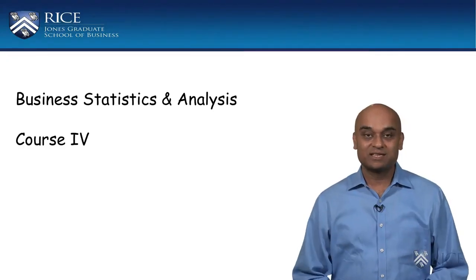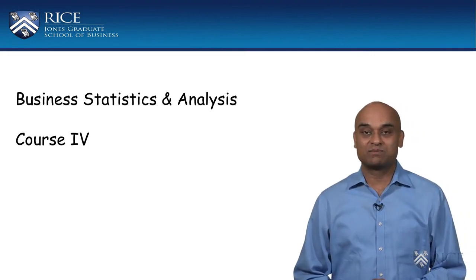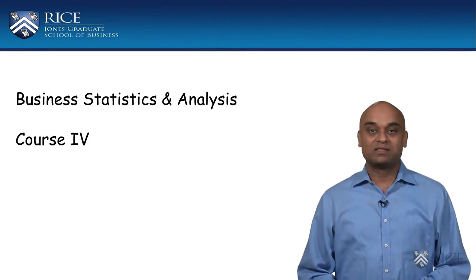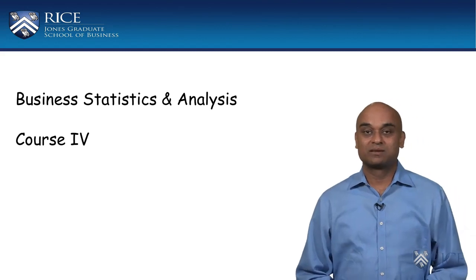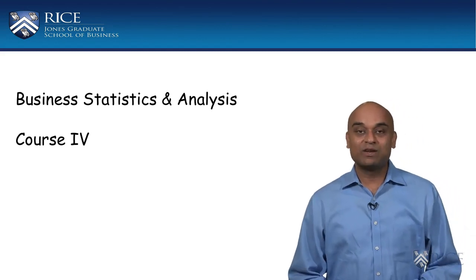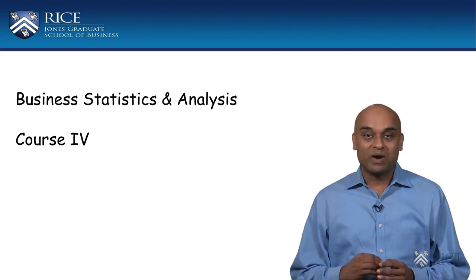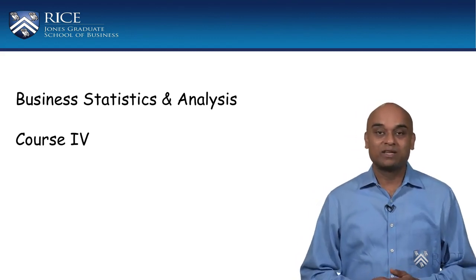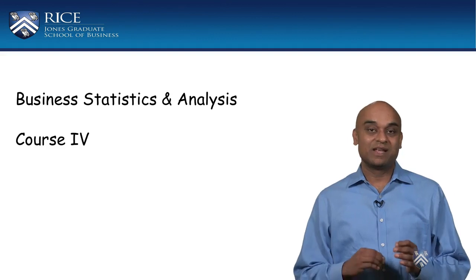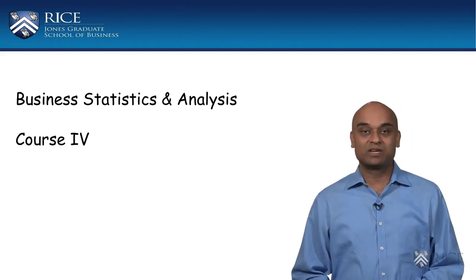In this lesson, we introduce and understand the goodness of fit measures for a regression model, namely the R square and the adjusted R square. These values are produced as part of the regression output. We get to understand what these values are and how they are to be interpreted in evaluating the fit of your regression model to the data.